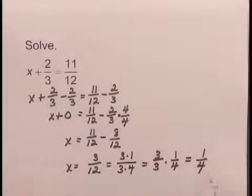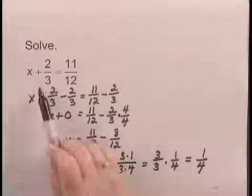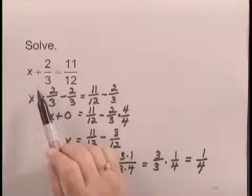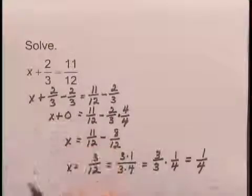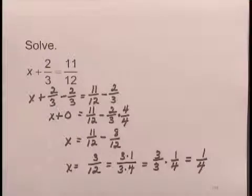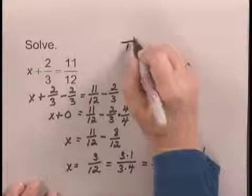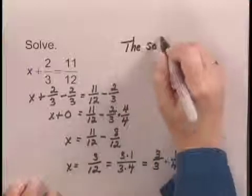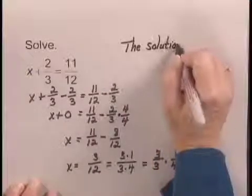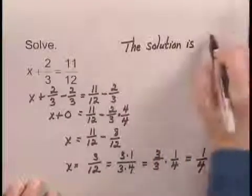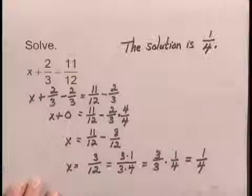To check, I would substitute 1/4 for x, and find out if 1/4 plus 2/3 does equal 11/12. If you do that addition, you would find that it would equal that. So I can say the solution is 1/4. No 1/5. So I can say the solution is 1/5.